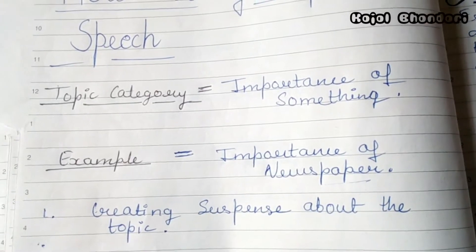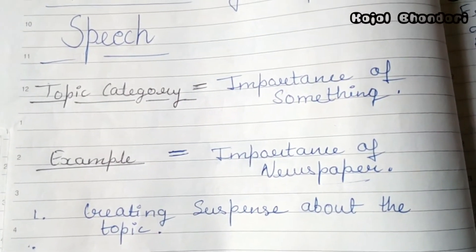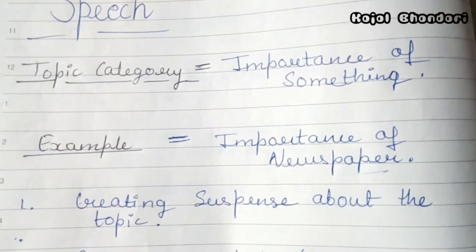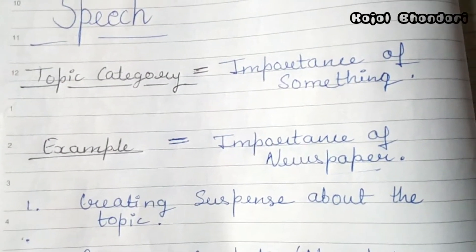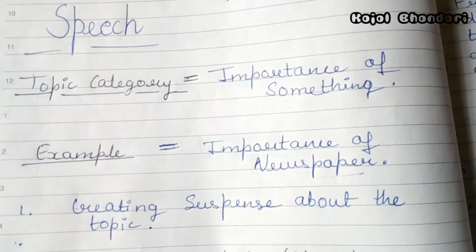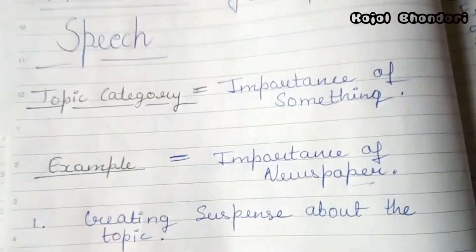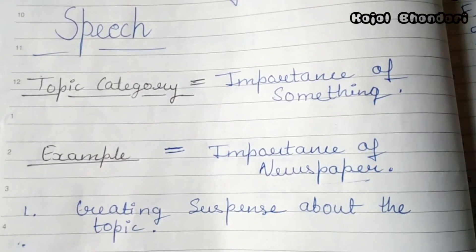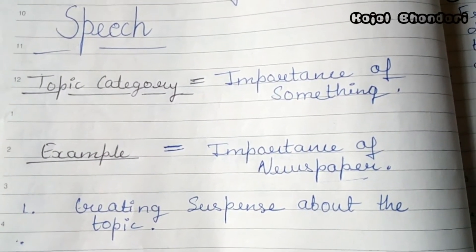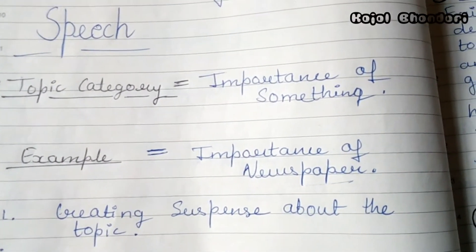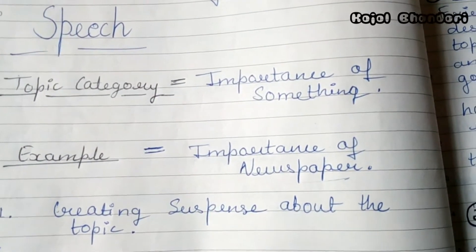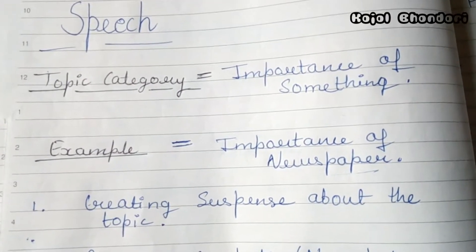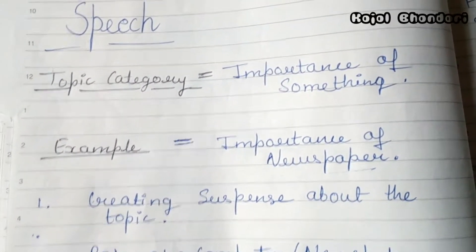Friends, the first step is very important. Some people come to the stage to give a speech and they directly say 'my topic is newspaper' — whatever it is. But they don't say the topic directly. Because people become more interested when there is suspense. So they create suspense about it, like in an example.